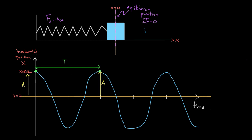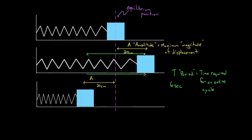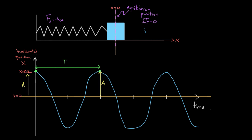That would be the period T, which we said was six seconds. So if it really is six seconds, and we count this as time T equals zero, this would be six seconds, this would be three seconds — that'd be half of a period — this would be nine seconds, this would be 12 seconds, which would be two whole periods.